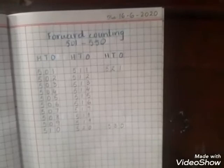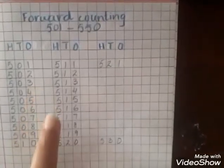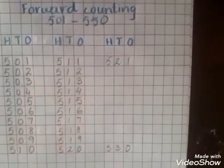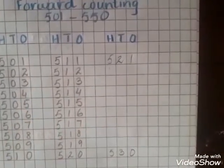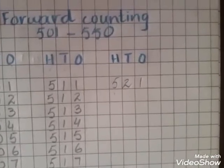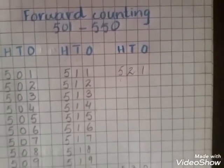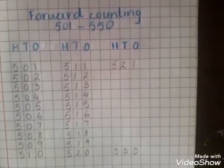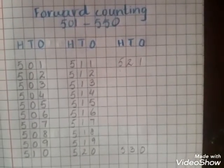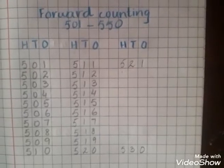So your homework is: you have to write the forward counting from 501 till 550 in your maths copy. After doing that, make a click and send it. Take care. Bye bye.